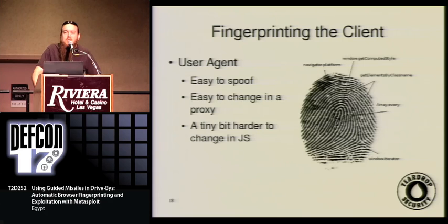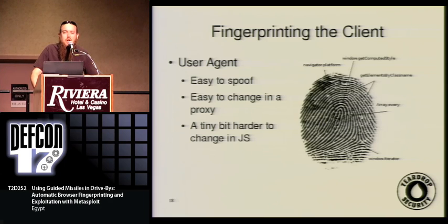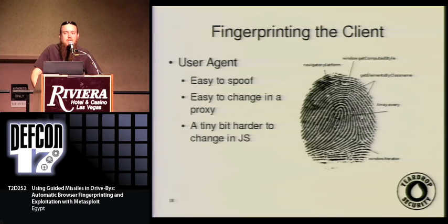All of this is harder to change in JavaScript. Firefox using the user agent switcher add-on will also change all of the JavaScript objects that tell you what's in the user agent. So if you use user agent switcher to change to IE 7, the JavaScript objects also look like IE 7, with a couple of exceptions. In Internet Explorer, there's basically no way to change that — all of that shows up in JavaScript as really the right thing. But it doesn't matter with Internet Explorer, as we'll see in a minute.